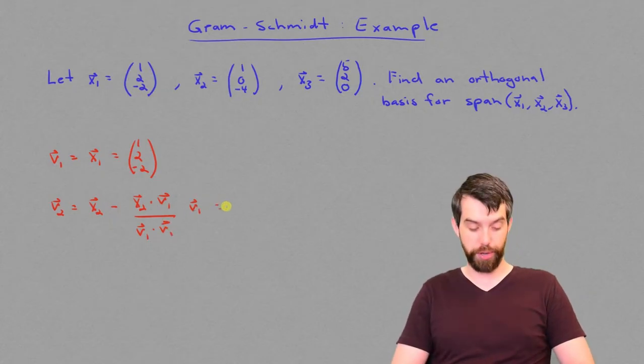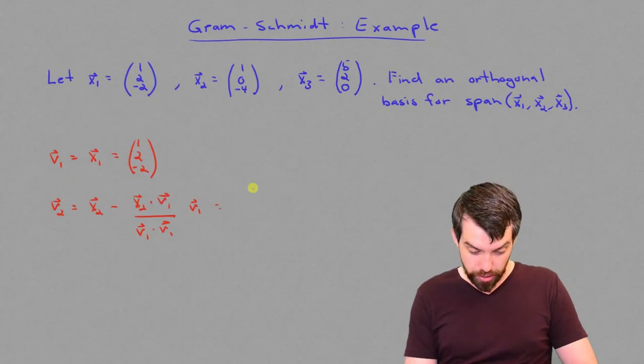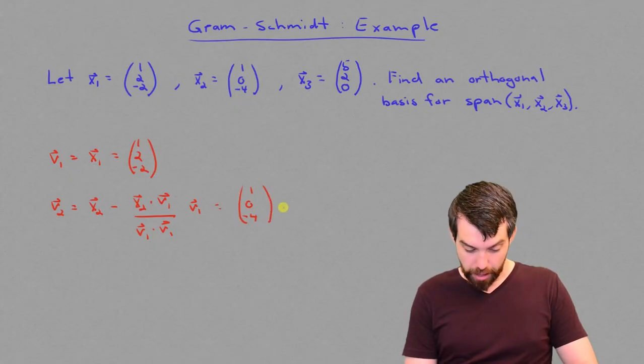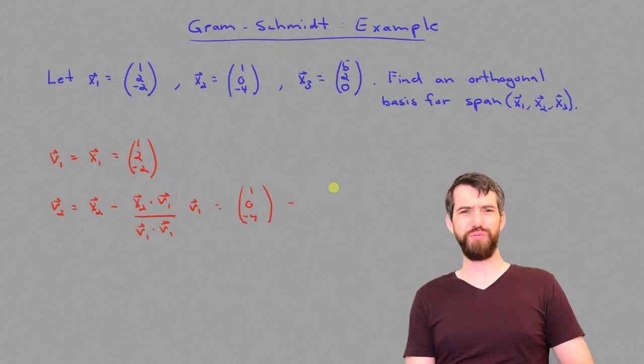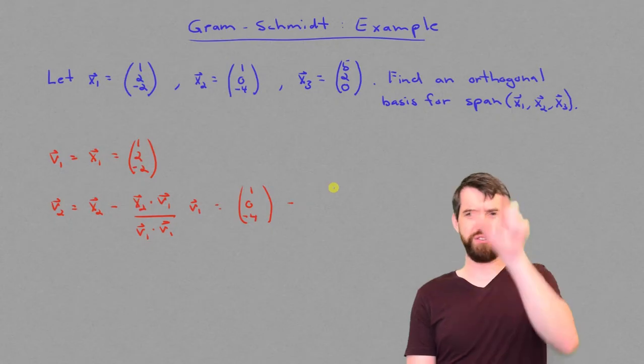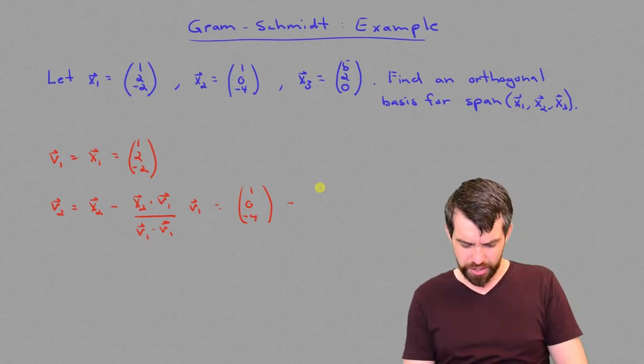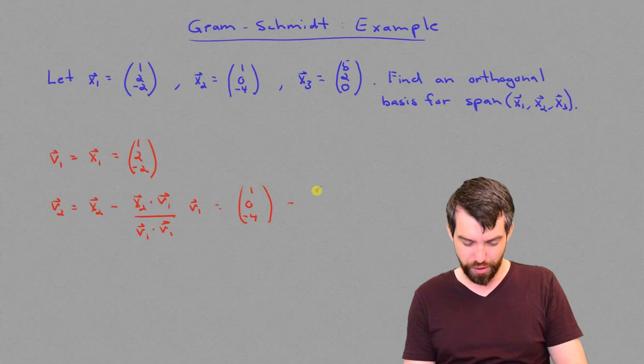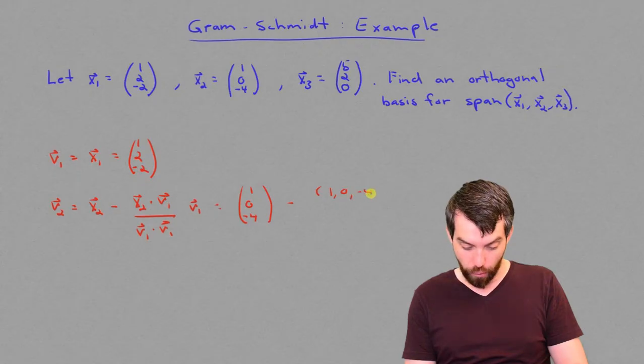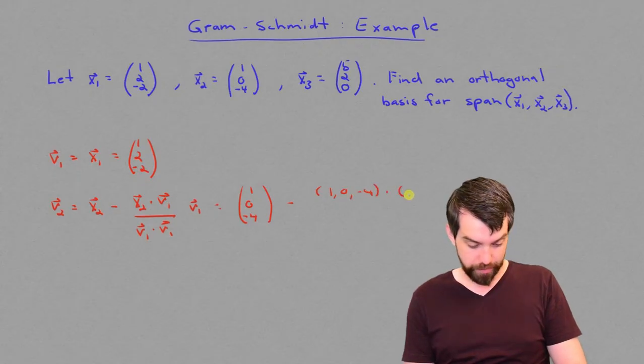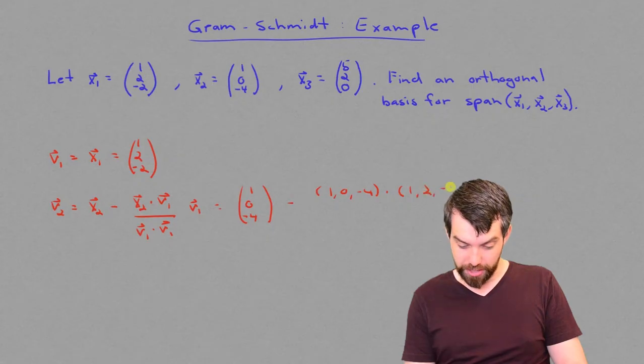So that's our process. Let's do the computation. So the x2 here is 1, 0, minus 4. Then I'm taking the projection, and you can have a choice of whether you choose to represent these vectors vertically or horizontally. It doesn't really matter. So often when I have fractions, I prefer to write my vectors horizontally. So x2 dot v1 is 1, 0, minus 4, dotted with, and then v1, 1, 2, minus 2.